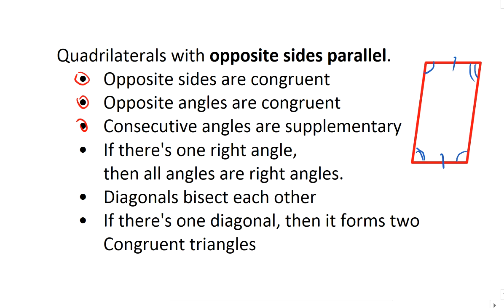So these two will be congruent to each other, and these two will be congruent to each other. Consecutive angles, meaning these two here are basically next to each other, or perhaps the bottom one with the top one, those are supplementary, meaning that they add up to 180 degrees.